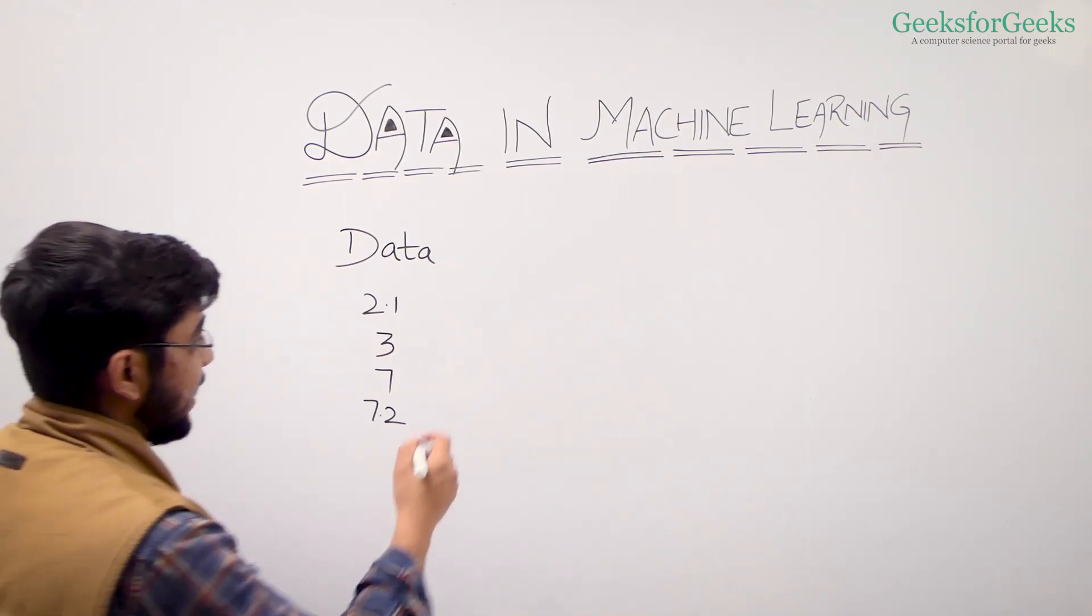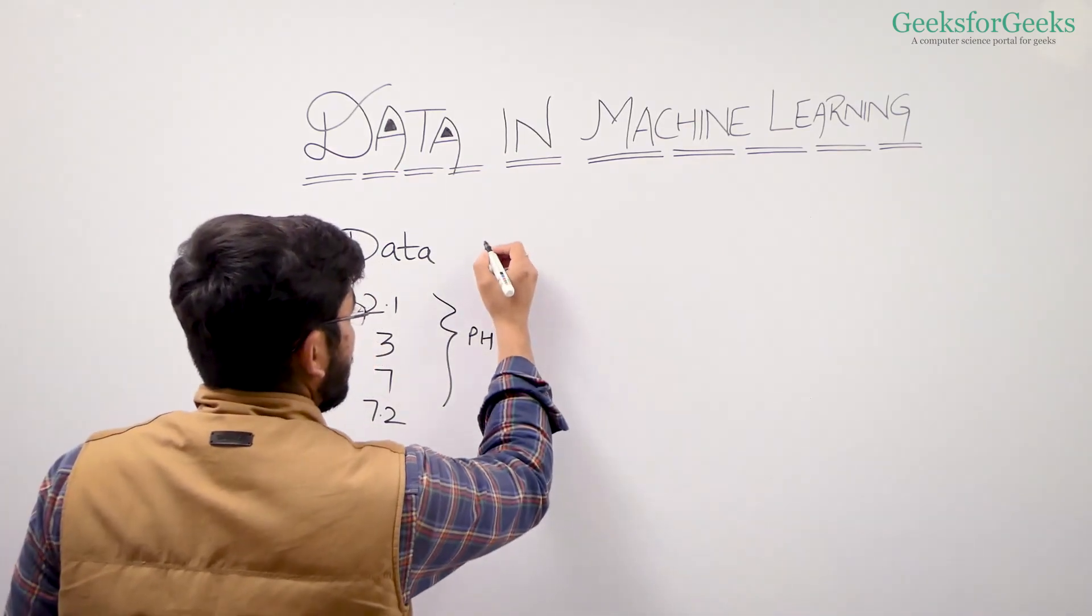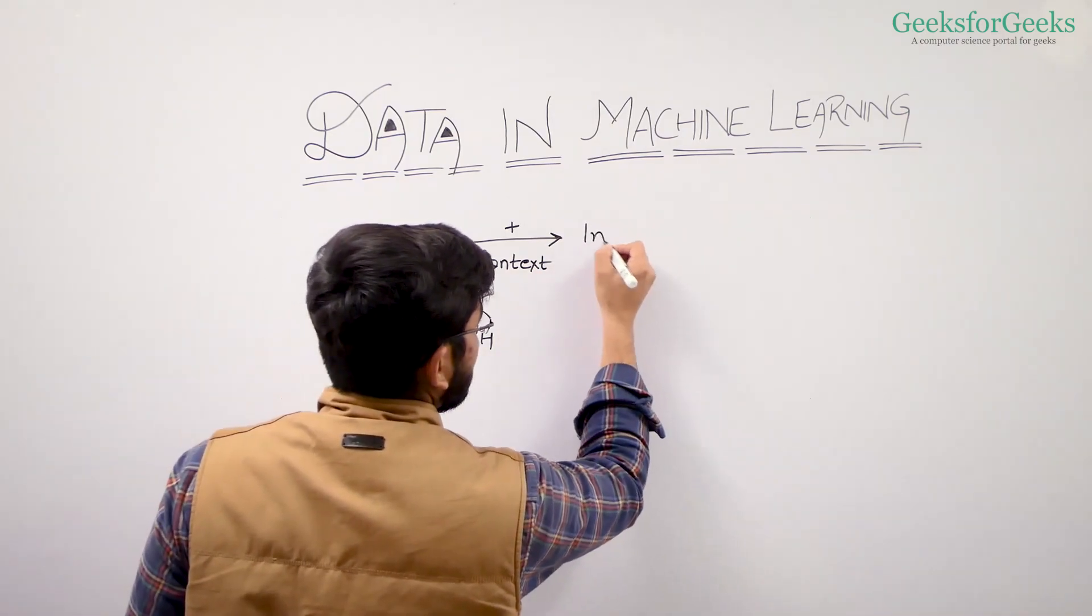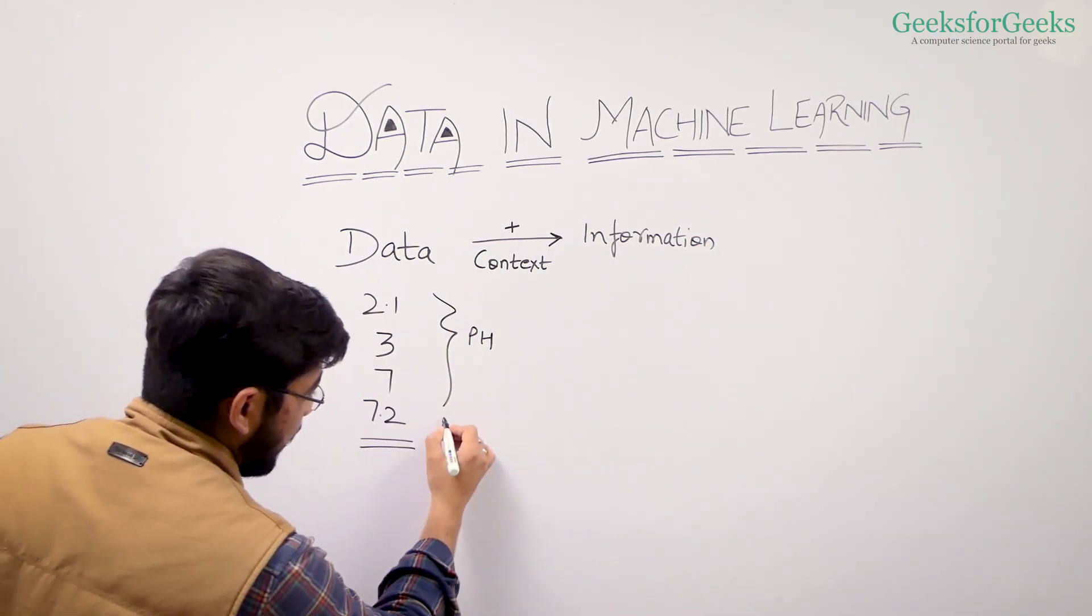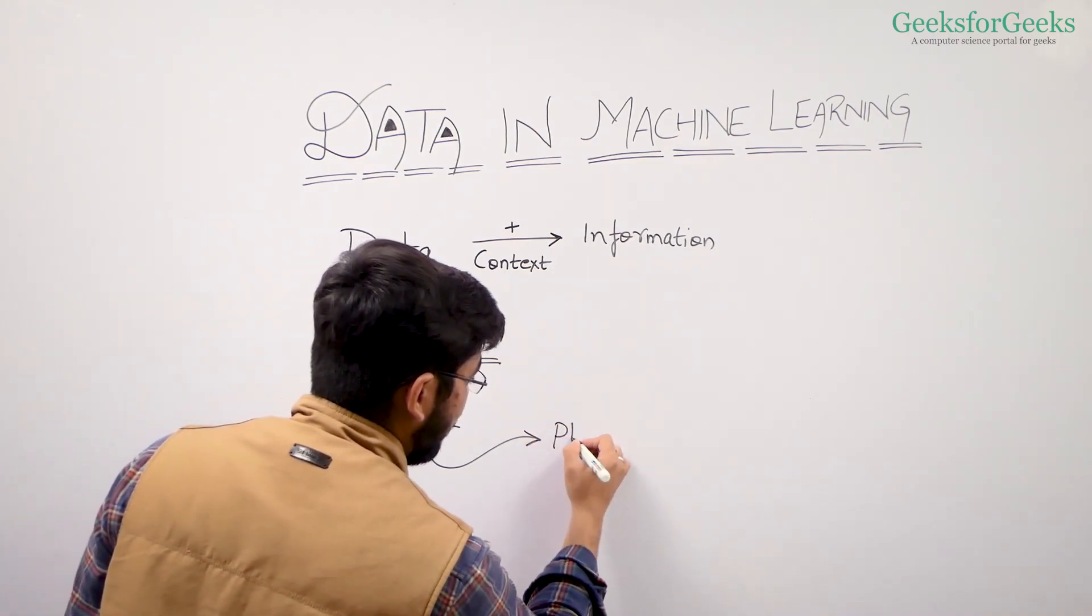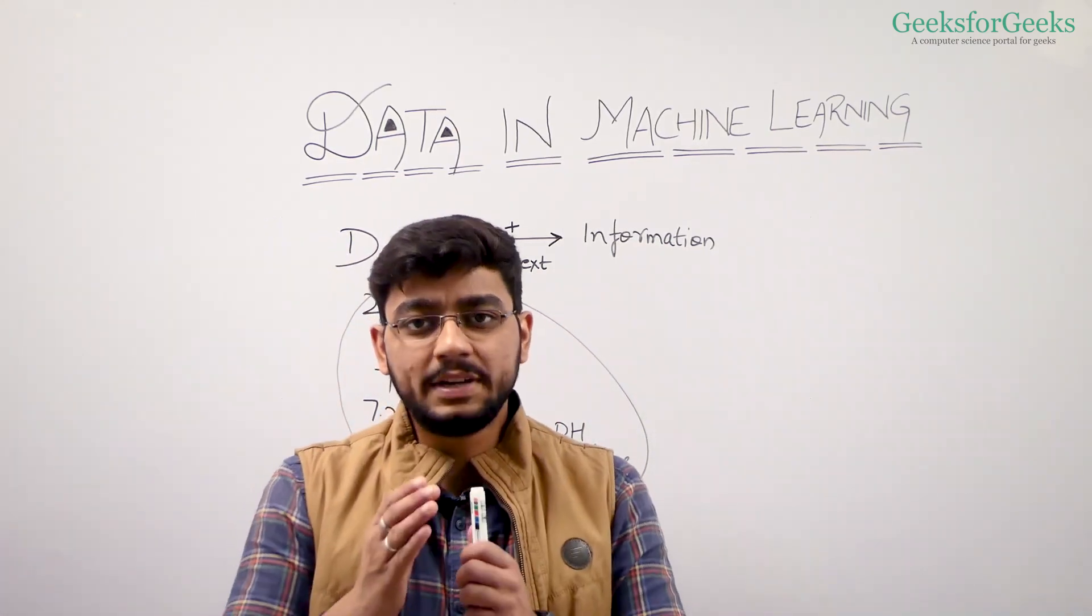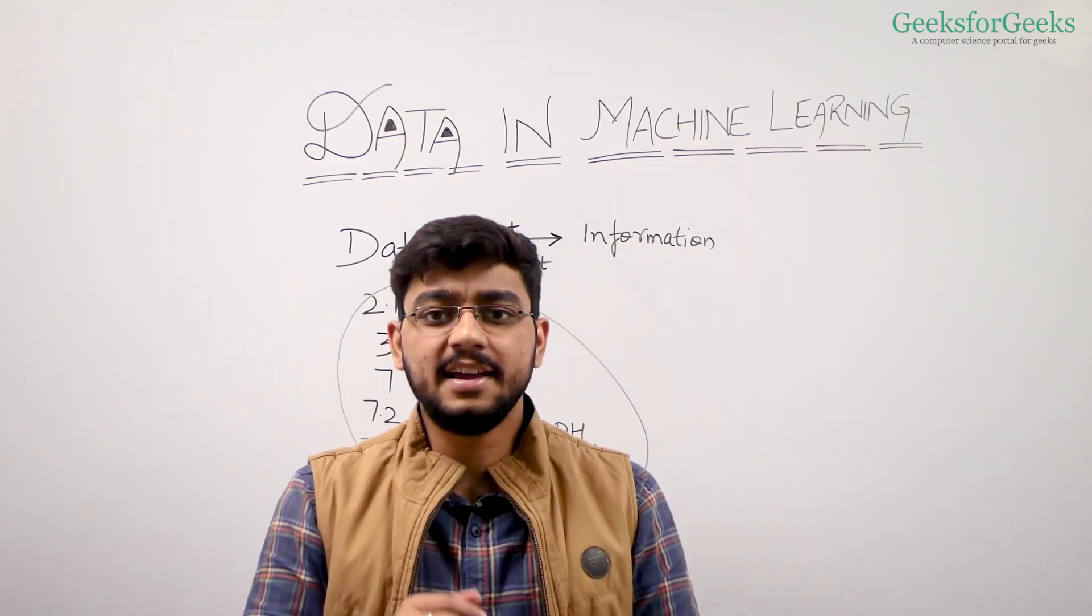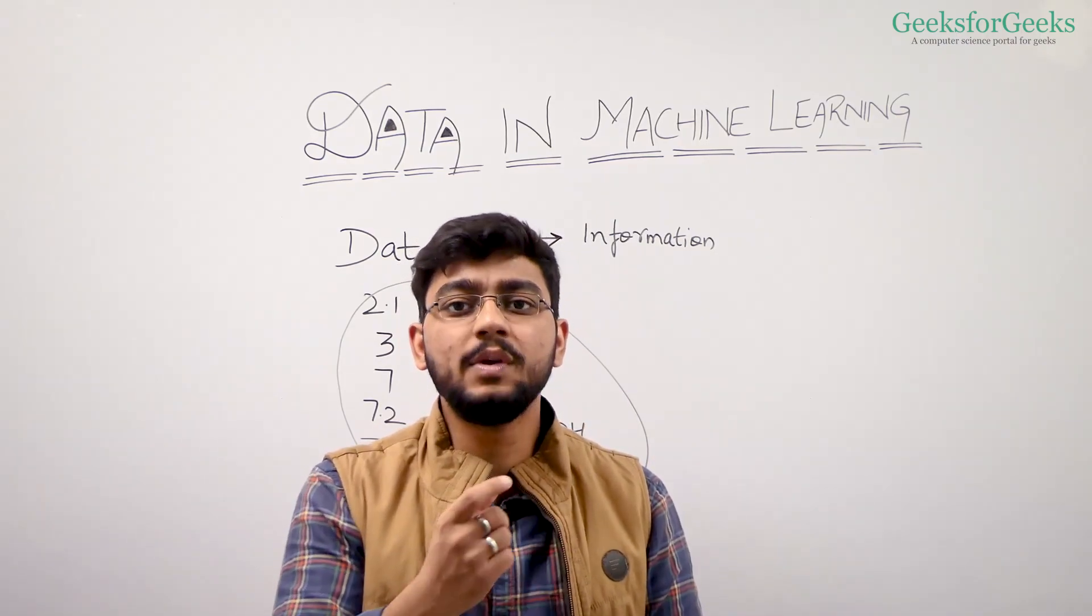But now, if I say that these values are pH values, then I have added context with my data. So data plus context is information. For data to be called information, data must be contextualized, categorized, calculated, and condensed. That's very important when we want to say that yes, we have information with us.